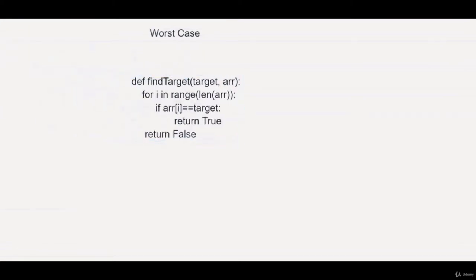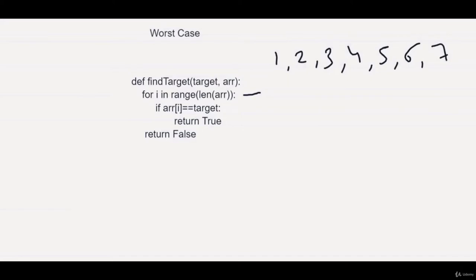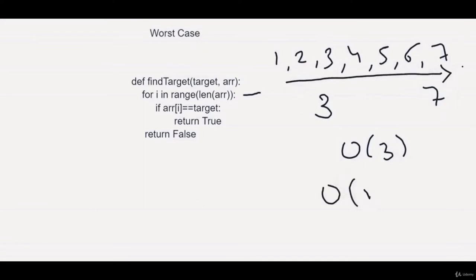Here we have a program trying to find a target in an array. The for loop runs from 0 to n, and whenever our target matches a particular index in the array, we return true; otherwise we return false. Suppose we have an array like 1, 2, 3, 4, 5, 6, 7 and the target is 3. The loop will run 1, 2, 3 — it finds the target and returns, so the complexity would be O(3). But in the worst case, if the target is 7, the complexity goes from 1 to 7 which is O(n). We always care about the worst case because we do not know what our target could be.